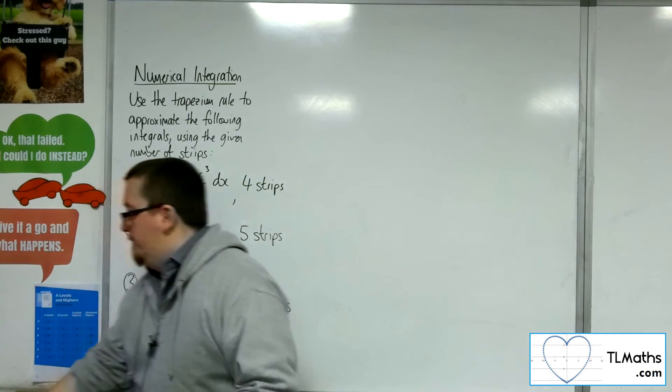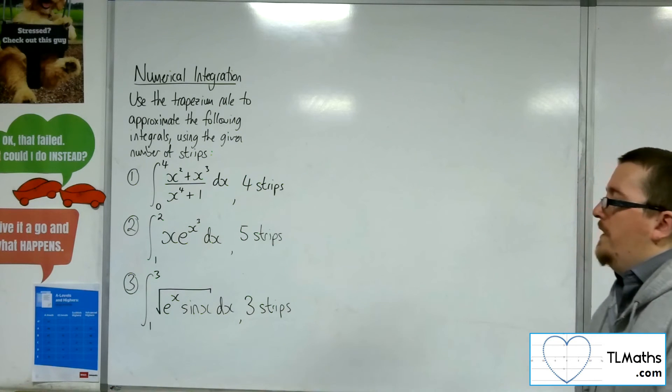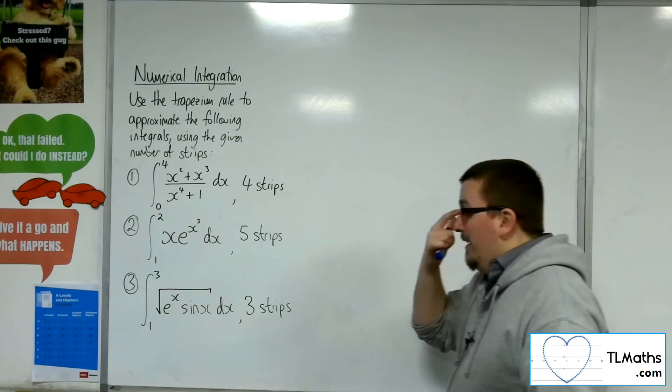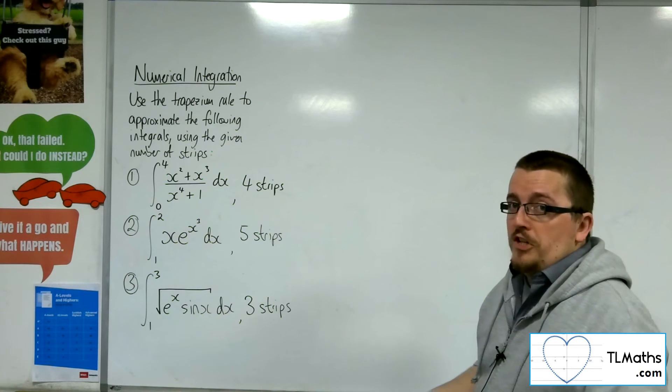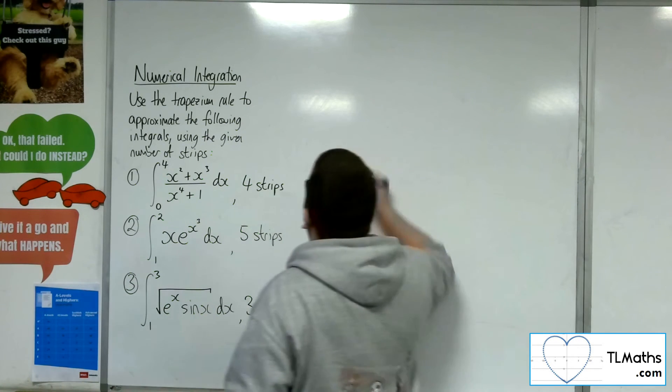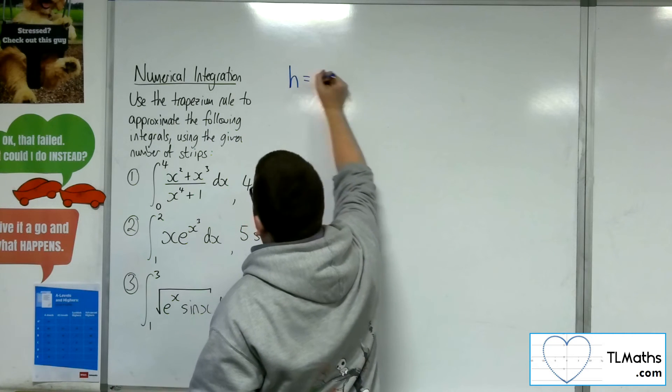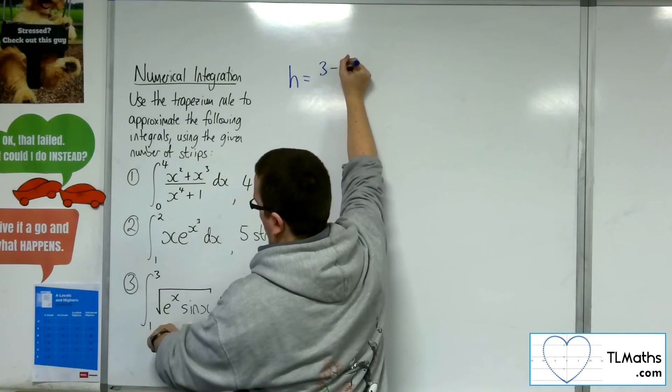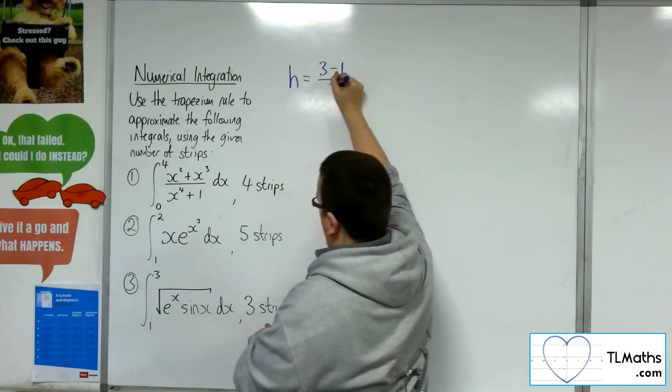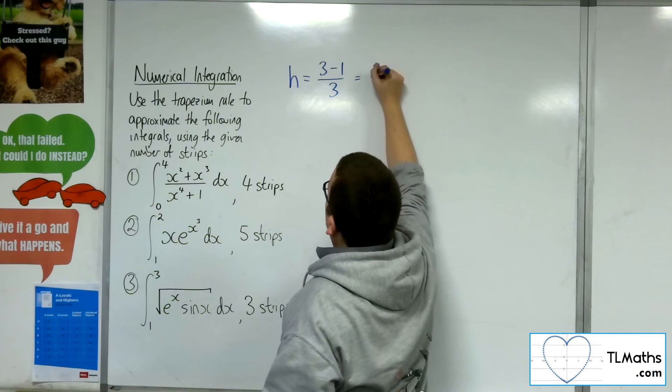Let's have a look at number 3. Last one. The integral between 1 and 3 of the square root of e to the x sin x in 3 strips. So first of all, the width of the strip. So we've got 3, take away 1, divided by the number of strips. So that's 2 thirds.